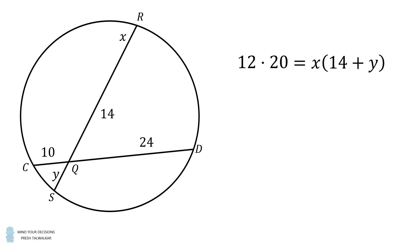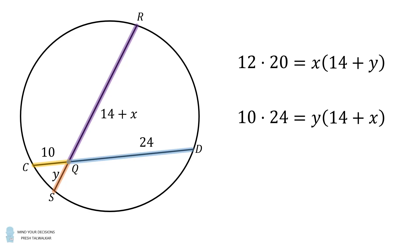Let's now focus on chord CD. From here, RQ equals 14 plus X. We then have CQ multiplied by DQ — that's 10 multiplied by 24 — is equal to SQ multiplied by QR, that's Y multiplied by the quantity 14 plus X.